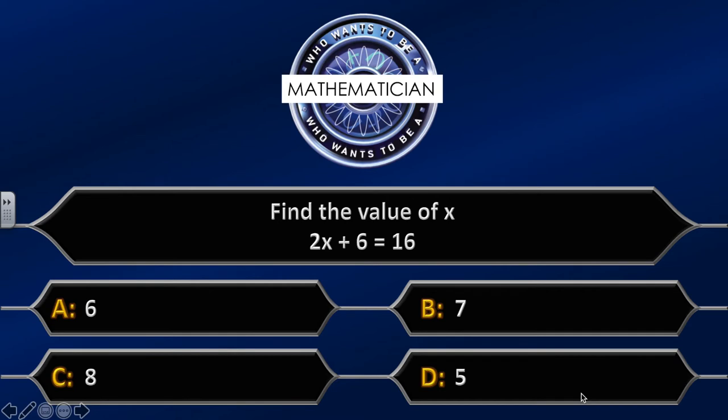Find the value of x. 2x plus six equals sixteen. The four possible answers are: A equals six, B equals seven, C equals eight, D equals five. I'm going to give you another ten seconds to answer this question.